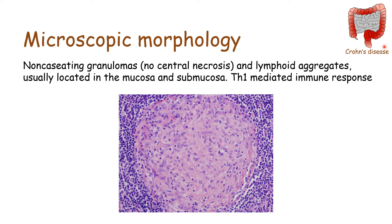For the microscopic morphology of Crohn's disease, we will see non-caseating granulomas and lymphoid aggregates, usually located in the mucosa and submucosa. A non-caseating granuloma means there is no central necrosis inside the granuloma — we can see many white cells still present in the center with no necrosis. Crohn's disease is a T helper 1 mediated immune response, meaning it is a cell-mediated response where cells recruit more cells, walling off the source of inflammation to form this granuloma.